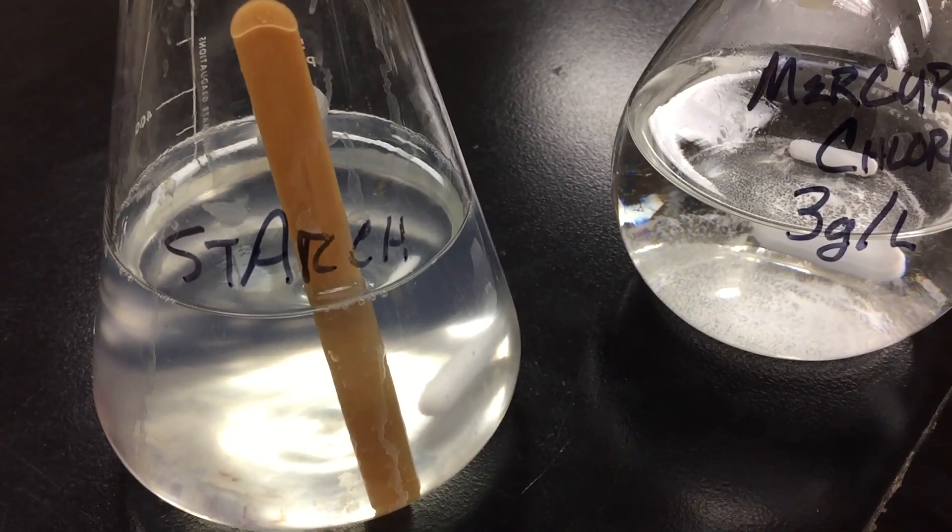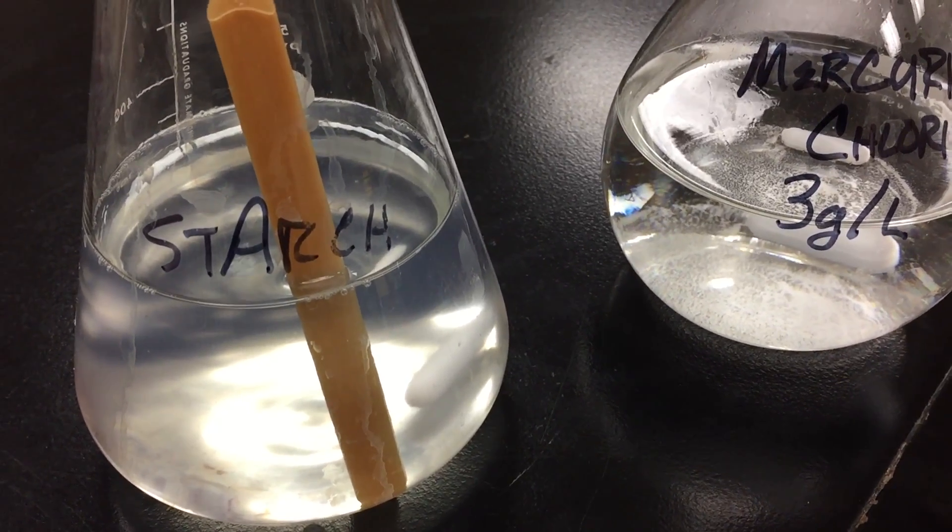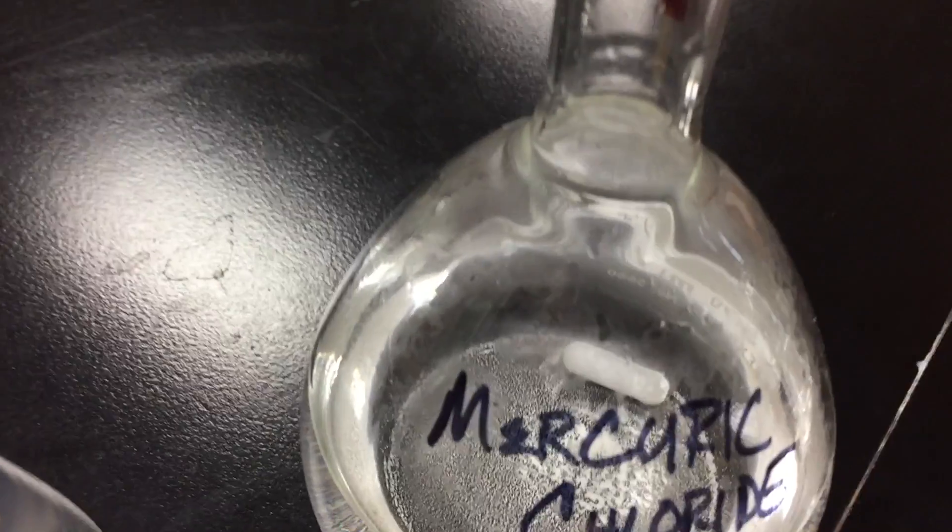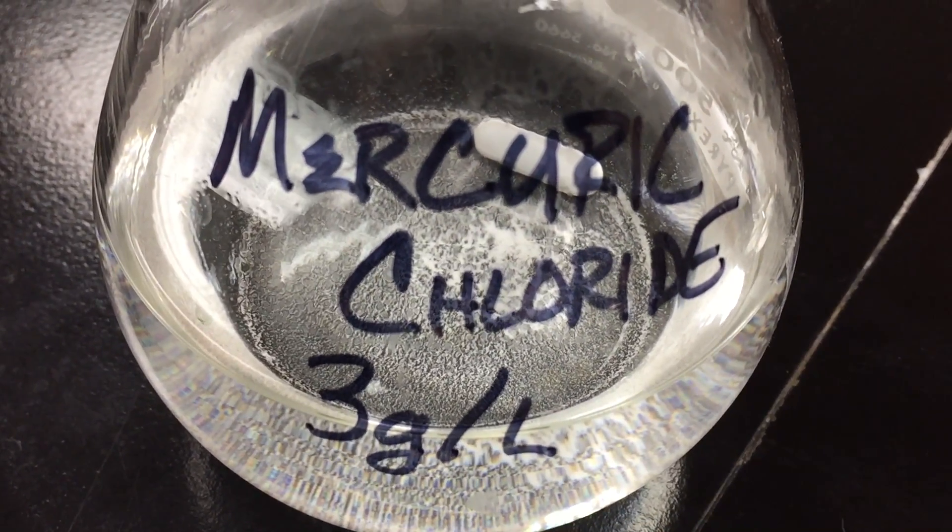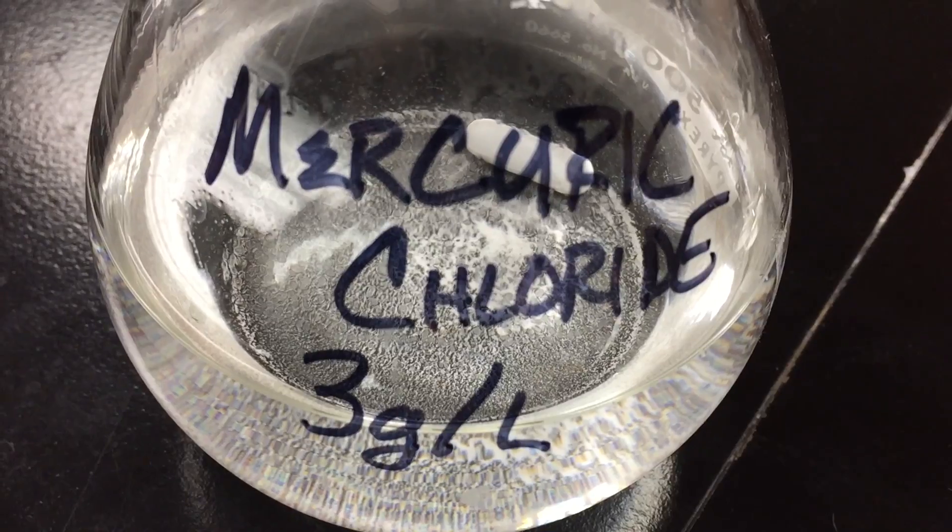We've also got some mercuric chloride, some very cool stuff. We did about three grams in a liter. I only made half a liter so it's about a gram and a half of mercuric chloride.